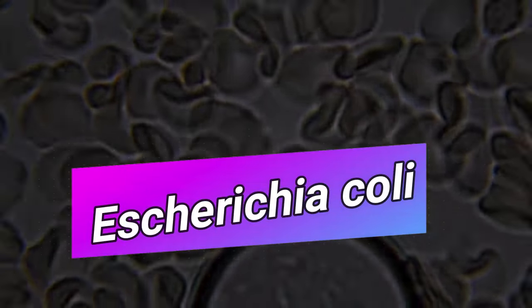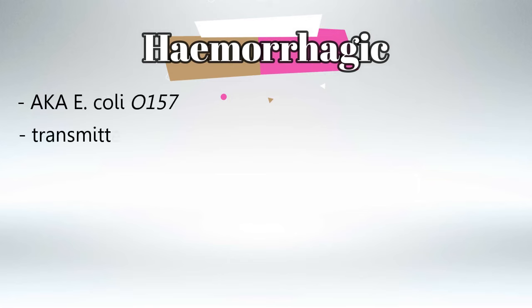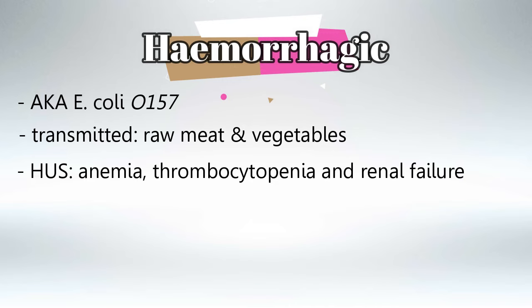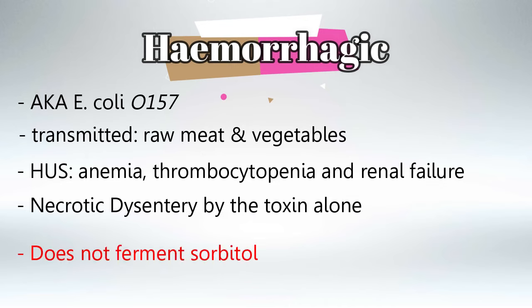The first type is called hemorrhagic E. coli, also known as E. coli O157. It transmits via undercooked meat and raw vegetables. This bacteria causes hemolytic uremic syndrome, which is anemia, thrombocytopenia, and acute renal failure.